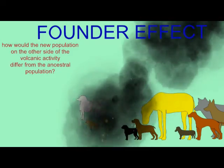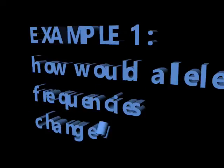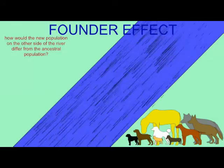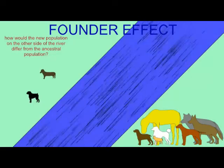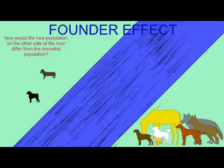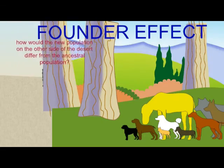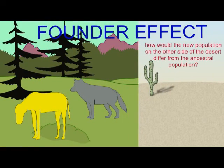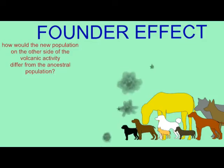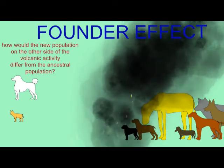Pleiotropy is the condition where one gene affects multiple traits. The founder effect is where a population is founded by a small number of individuals — say, a new island population — and that would then determine their allele frequencies. Sometimes a population is drastically reduced, such as during a mass extinction or a disease outbreak; this population would undergo a bottleneck.